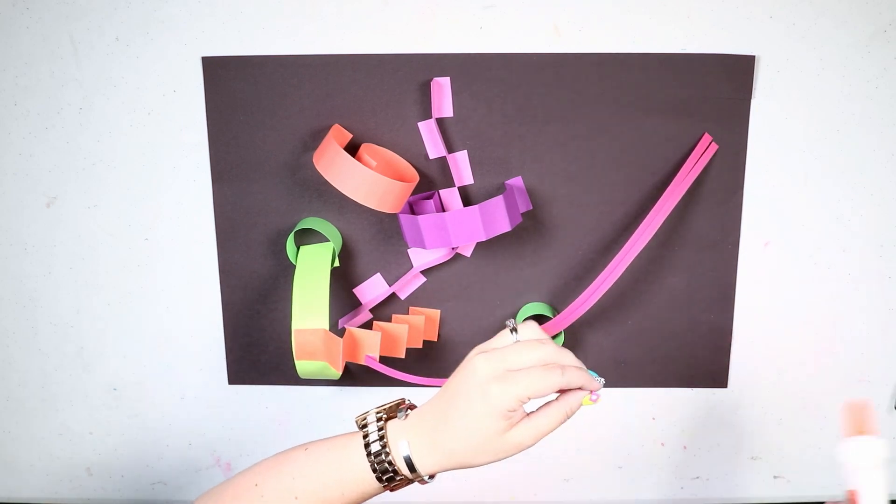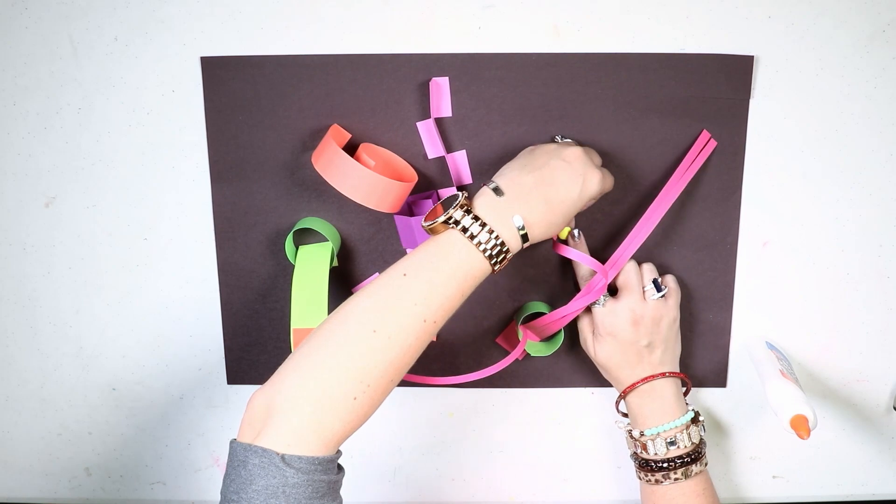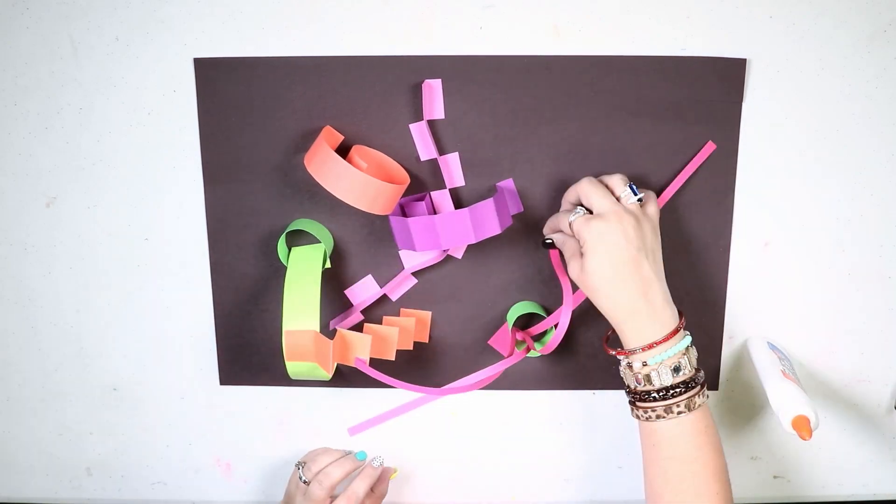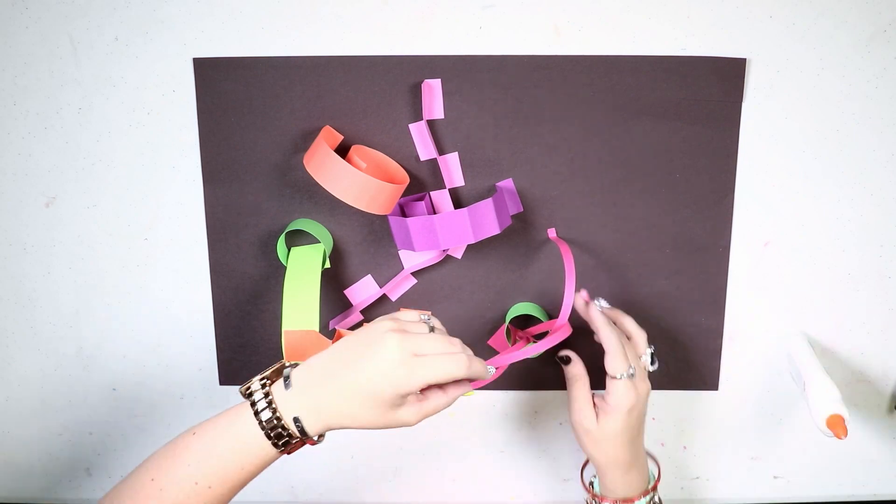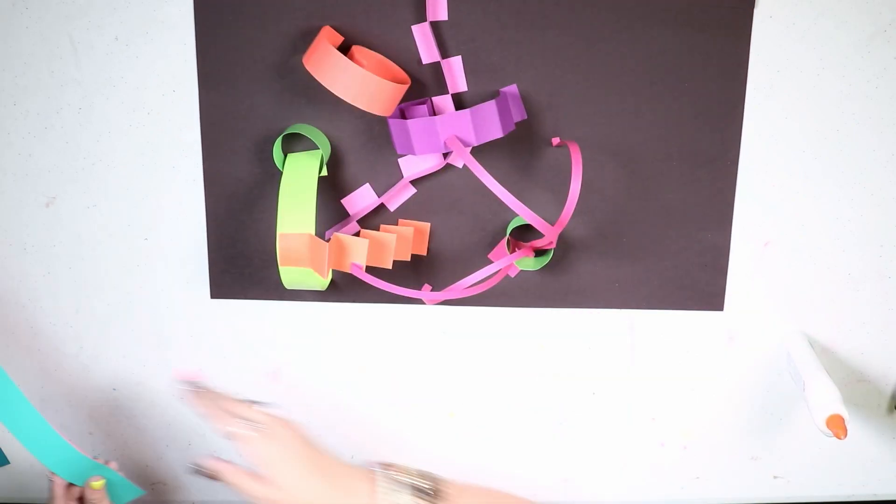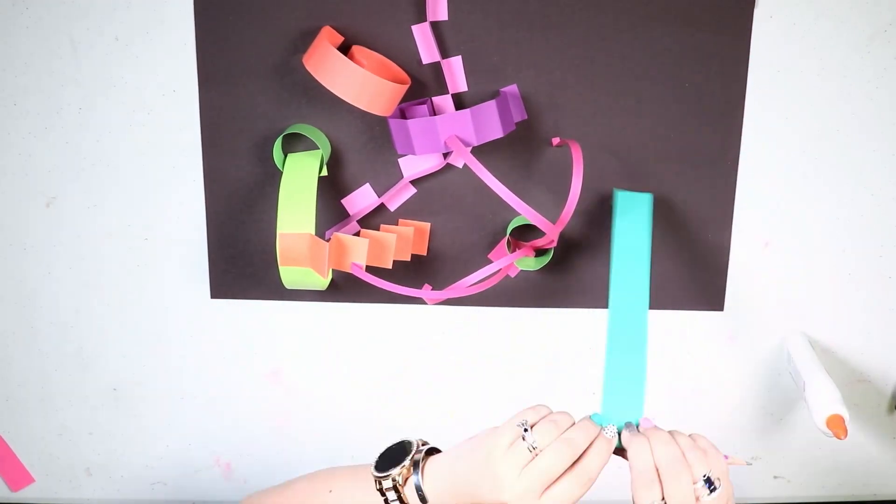This piece is my favorite because you can take your strips and you can glue them anywhere you want and you can twist them around each other. You can make braids. I like this one a whole lot because they come back to the same starting point.